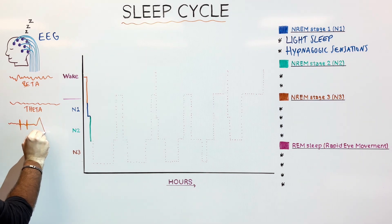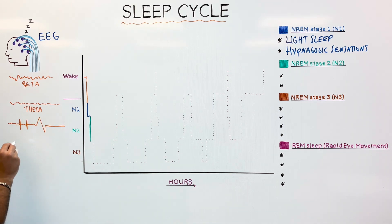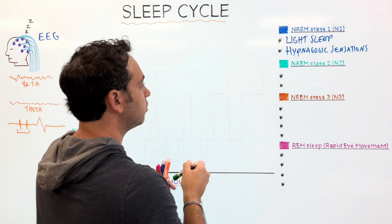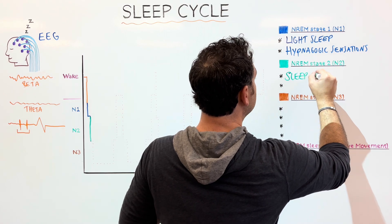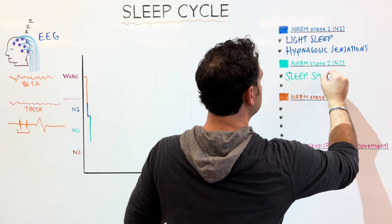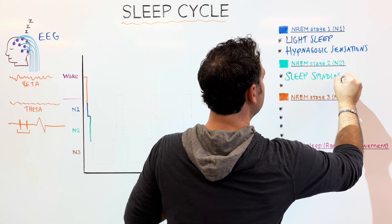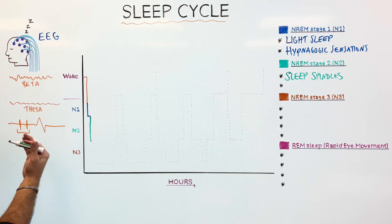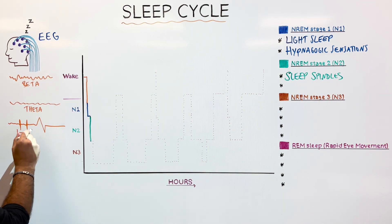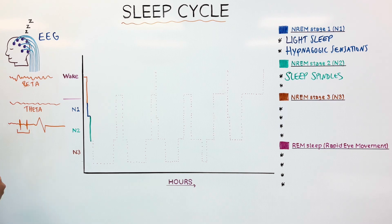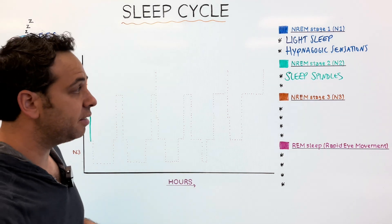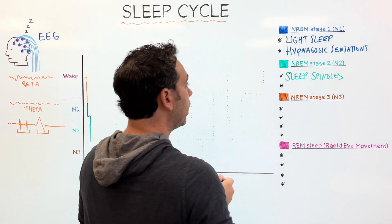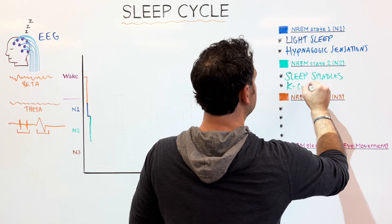It almost looks like a heartbeat. What are these? These brief bursts of activity are called sleep spindles. These bursts of activity. And what I also see are these little kind of like up high amplitude, and then they drop down. These are called K-complexes. So, we have theta waves with brief burst activity, sleep spindles, and what is called K-complexes.